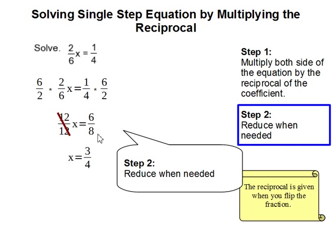And 6 over 8 is then reduced to 3 fourth. And our answer is x equals 3 over 4. And this completes our problem.